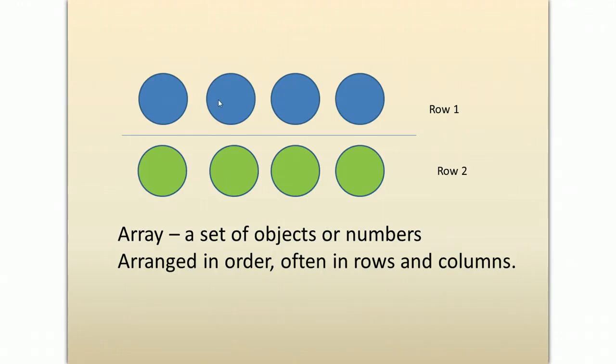I have 1, 2, 3, 4 in my first row. 1, 2, 3, 4 in my second row. So my factors would be 2 times 4 and my product here would be 8.